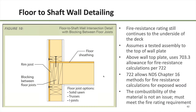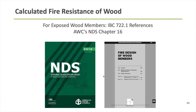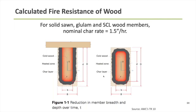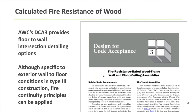How do we justify that two layers of blocking provide continuity for a two-hour fire-rated wall assembly? We turn to Chapter 7 of IBC, which references NDS — the American Wood Council's National Design Specification for Wood Construction. Chapter 16 of NDS provides a means of calculating fire resistance ratings of wood members for up to two hours. It uses a nominal char rate of 1.5 inches of wood per hour of fire exposure, which is true for non-structural elements such as this blocking. Two layers of blocking each provide one hour of fire resistance rating — together, two hours of continuity through the depth of the floor up to the underside of the floor sheathing.